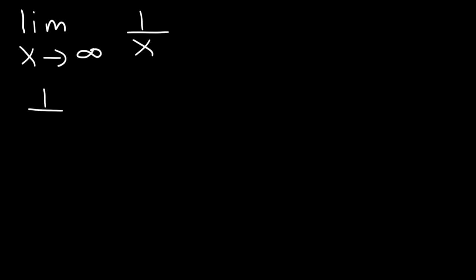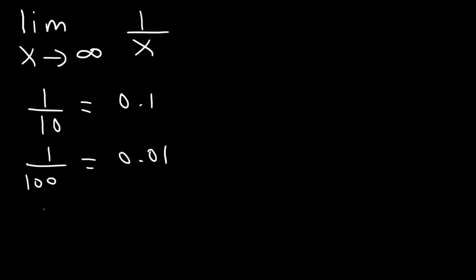Whenever the denominator is large, you're going to get a small value. If the denominator has a small value, you get a large value. For example, 1 divided by 10 is 0.1. 1 divided by 100 is 0.01. And 1 divided by 1,000 is 0.001.